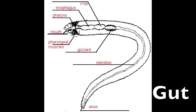The digestive and excretory system of an earthworm is very simple. Basically, food goes in one end and comes out the other, just like in humans. The digestive system is a complete tube through-gut, with two openings: the mouth and the anus. The food goes in the mouth and comes out through the anus.